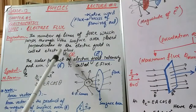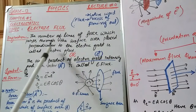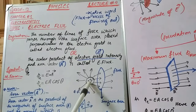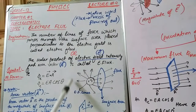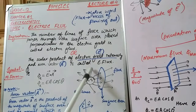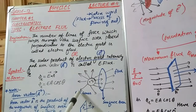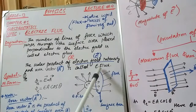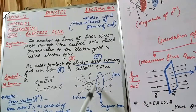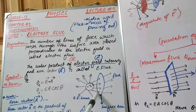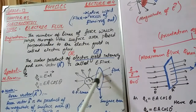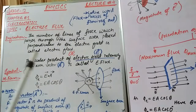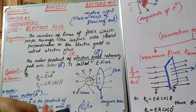I'll explain electric flux in two ways. First: the number of lines of force which pass through a surface area placed perpendicular to the electric field is called electric flux. I considered a positive charge; the electric field around this charge is represented by imaginary lines called electric field lines or electric lines of force. When I place any surface in the path of these electric field lines, those lines which cross this surface and come to the other side make electric flux.